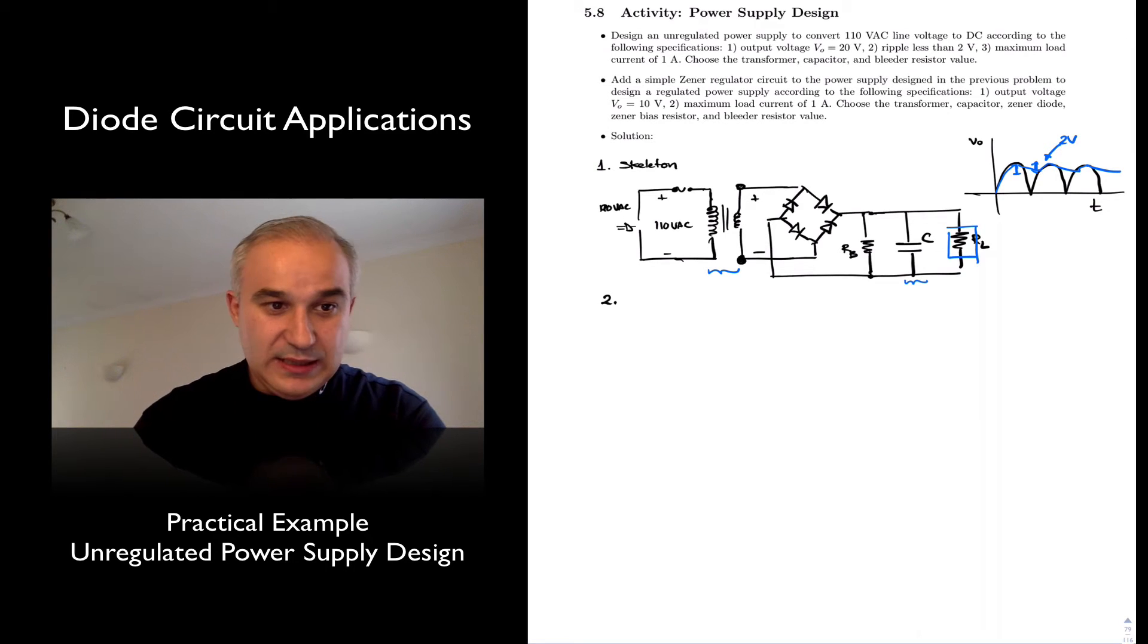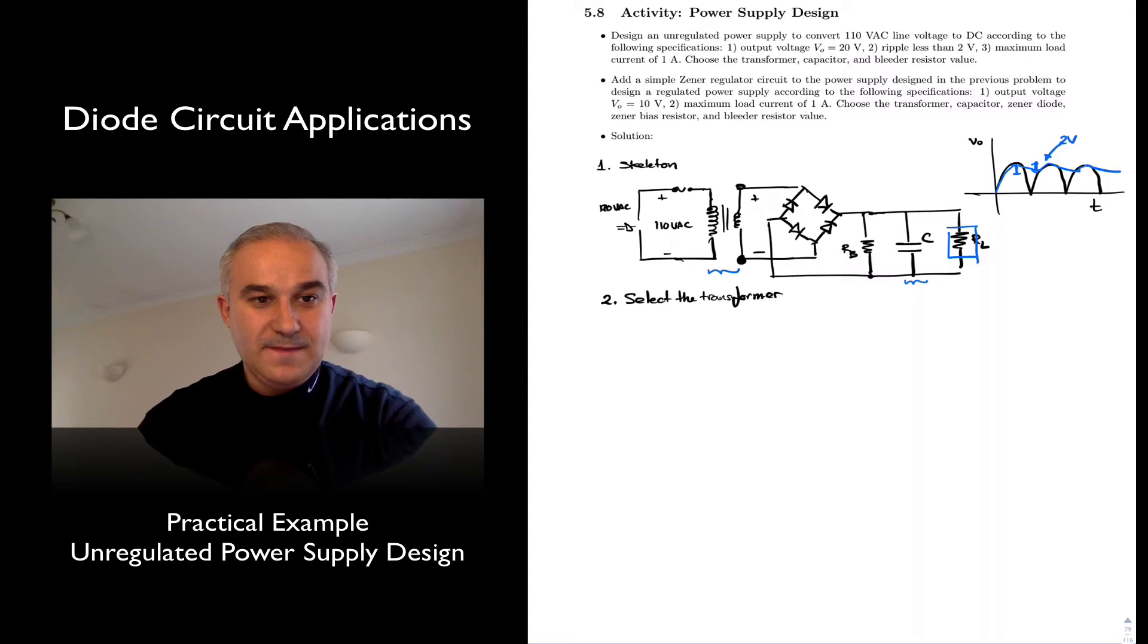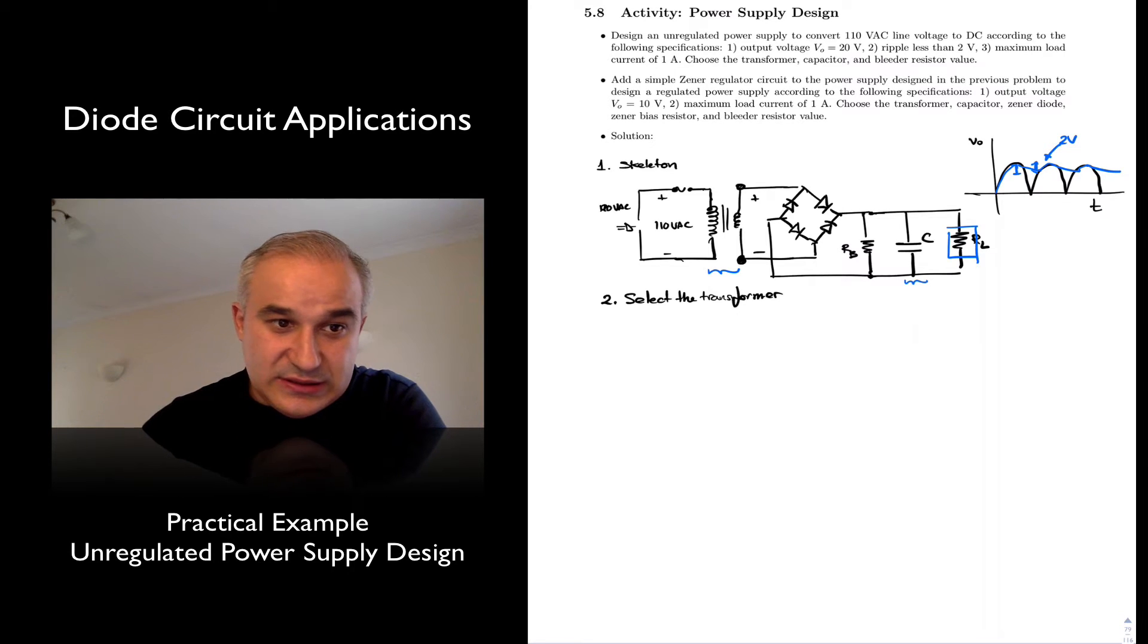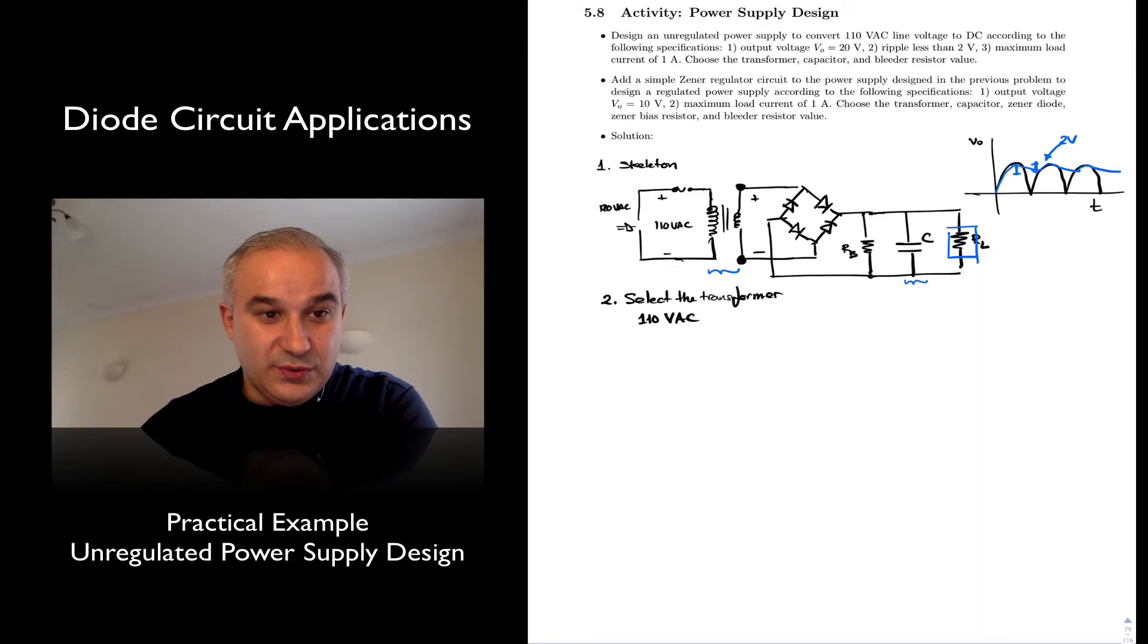Two. We are going to select the transformer. And so, what we have here is, we know that we have 110 VAC, and we need to say, well, what do we want to reduce that to? What is the voltage that we want at this other end?